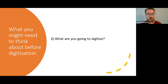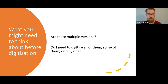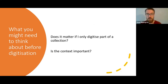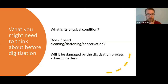What are you going to digitise? You need to think about what you definitely do and don't want to digitise, and whether you can start prioritising. Are there multiple versions — do you need to digitise all of them or only one? Does it matter if I digitise only part of a collection — for example, one letter from a bundle? Will somebody else digitise it if you don't, or is it unique to you? What is its physical condition — will it need cleaning, flattening or conservation work? Is it likely to be damaged by the digitisation process? Does having more than one copy affect your approach if something gets damaged in a scanner?